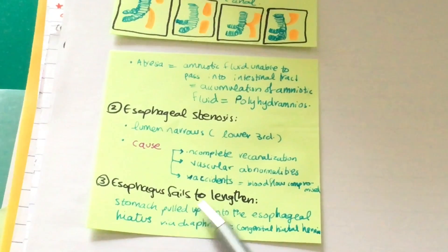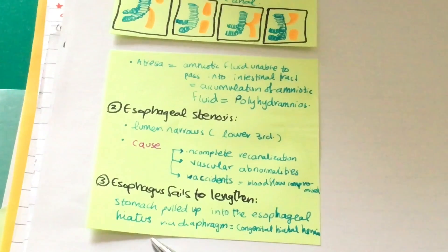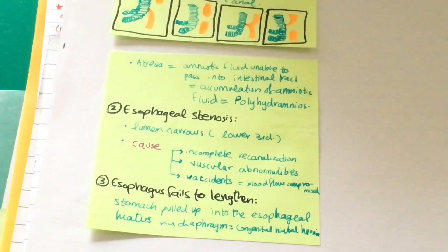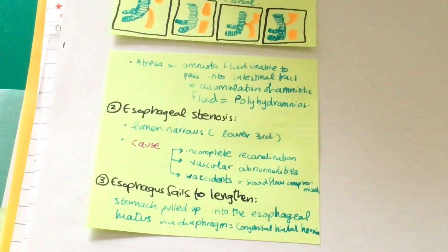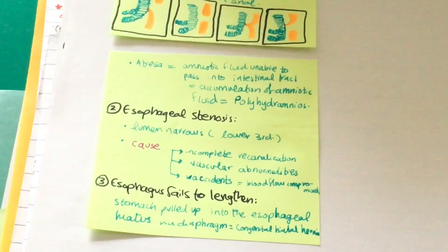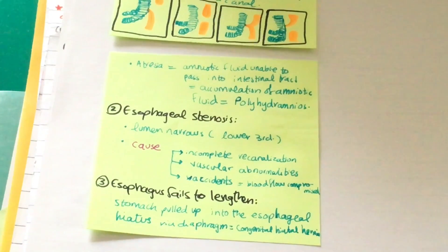The third anomaly is when the esophagus fails to lengthen. In this, the stomach is pulled up into the esophageal hiatus of the diaphragm, leading to congenital hiatal hernia. That's it. Thank you for watching, and make sure to pray for people in need. Thank you, bye.